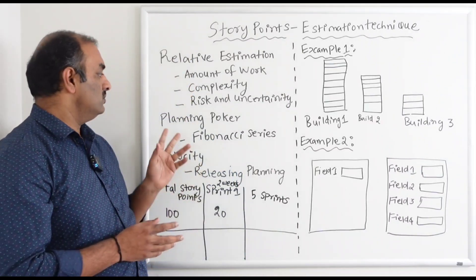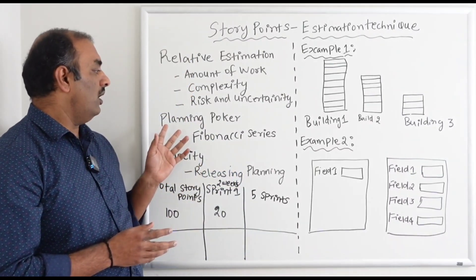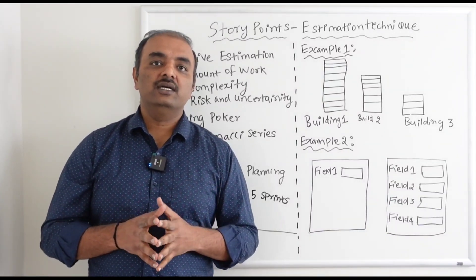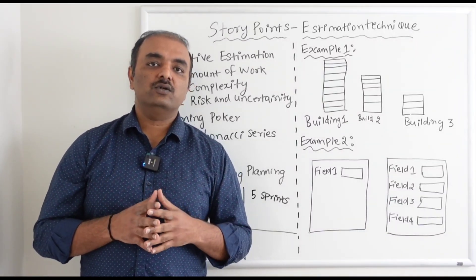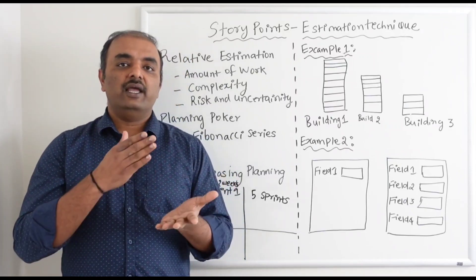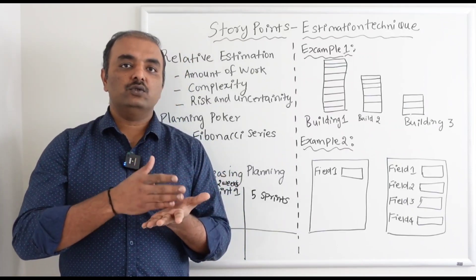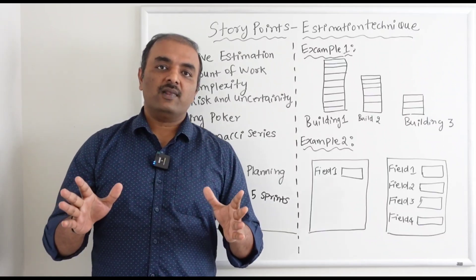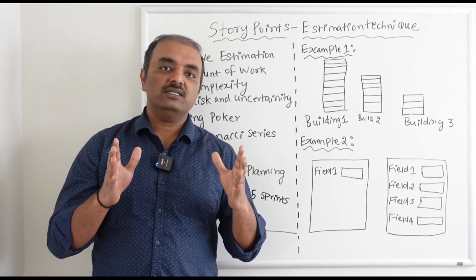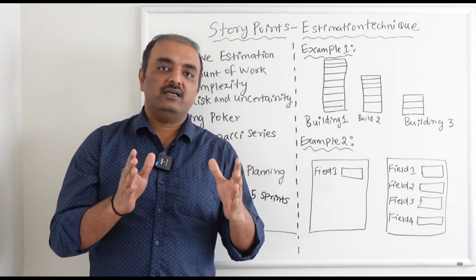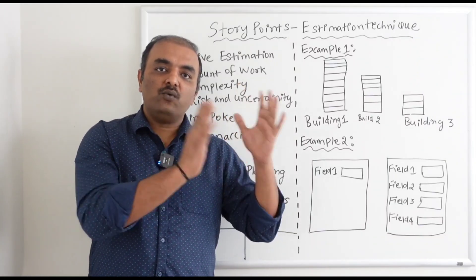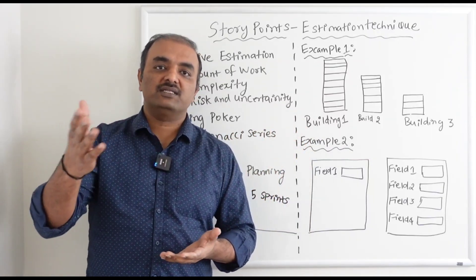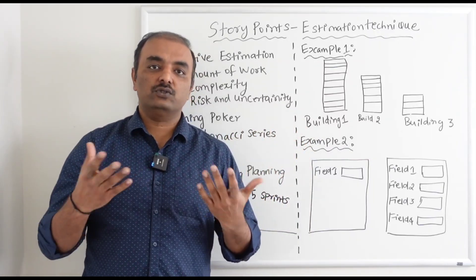So overall we take those three attributes into consideration when coming up with story points. Story points use a relative estimation approach following the Fibonacci series: 1, 2, 3, 5, 8, 13 — and this has nothing to do with days. All you are doing is relatively estimating: story one takes one story point, and story two is more complex so it takes two story points.